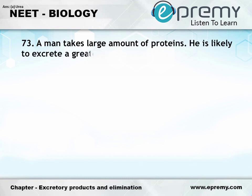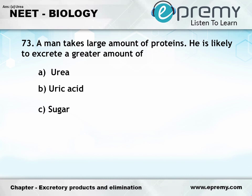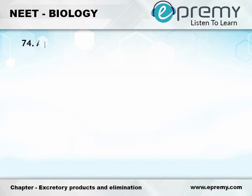Question number 73: A man takes a large amount of proteins. He is likely to excrete a greater amount of — Option A: Urea, Option B: Uric acid, Option C: Sugar, Option D: None of these. The answer is Option A: Urea.